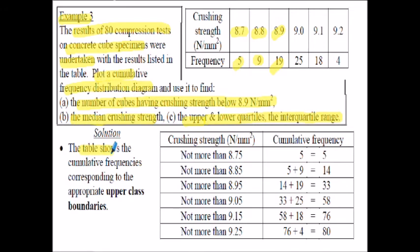We're going to produce a table of the cumulative frequencies corresponding to the upper class boundaries. Taking 8.7 to 8.8 - the upper class boundary for the 8.7 category is 8.75. So not more than 8.75 N/mm², we have 5 in our cumulative frequency - in other words, 5 cubes have strength less than 8.75 N/mm².